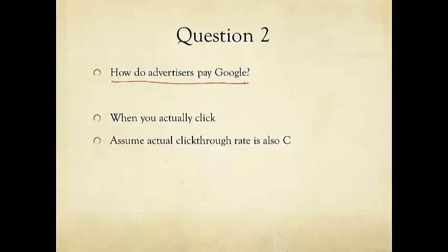So now we know that we have a single number C for each advertising spot. It's called the expected click-through rate. The second question is, how do advertisers pay Google? So when you actually click, then the advertiser has to pay Google.